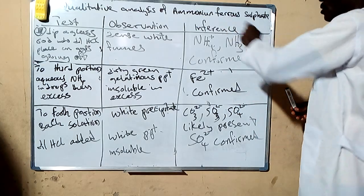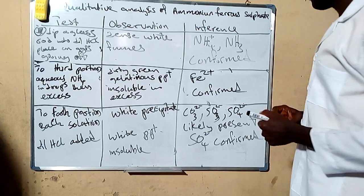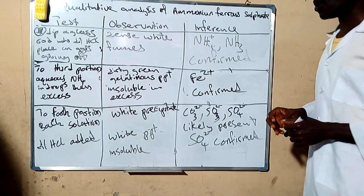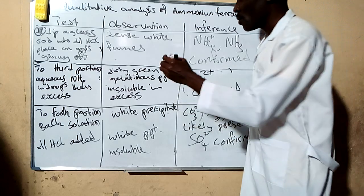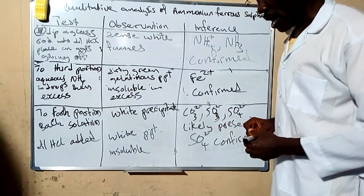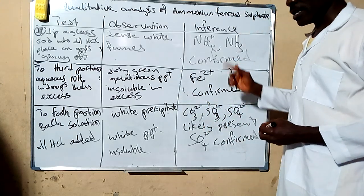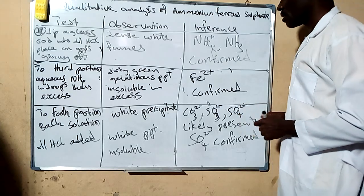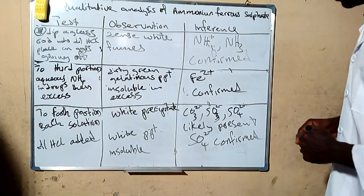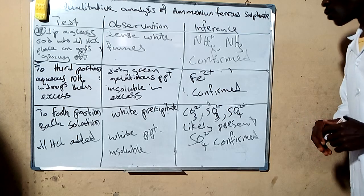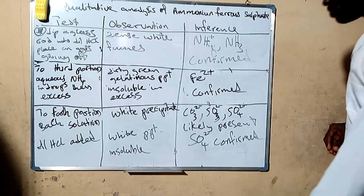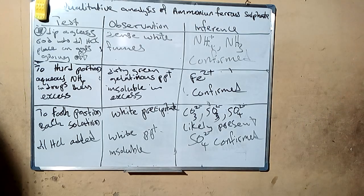Note that ammonium ferrous sulfate is a reducing agent. That is why we have the potassium dichromate as one of the reagents needed in this analysis. Thank you so much for your time.